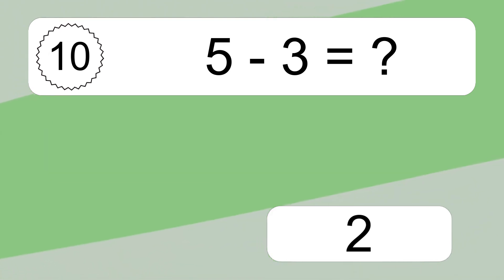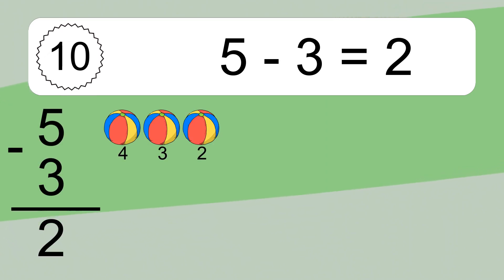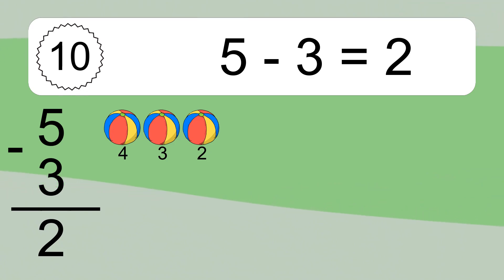5 minus 3 equals what? 5 minus 3 equals 2. Let's count it: 4, 3, 2.